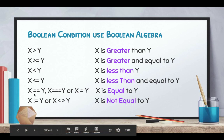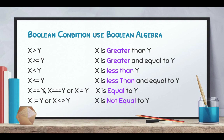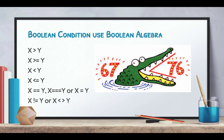We're using x just to make it easy, but that could be one variable compared to another variable. If you get confused about greater than or less than, one of the easiest ways to remember is the crocodile eats the greater one. So 67 is less than 76, and 76 is greater than 67. X is greater than y because the crocodile is eating x, and x is less than y because the crocodile is eating the bigger number.